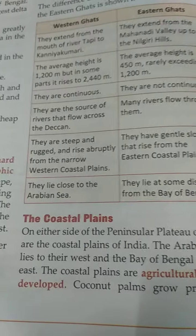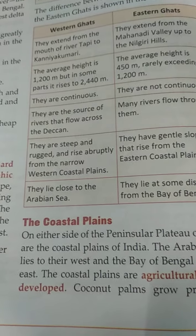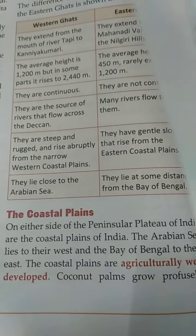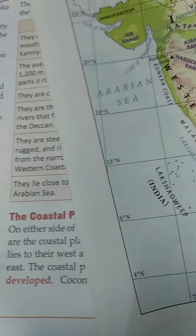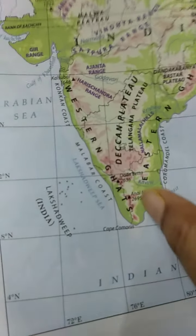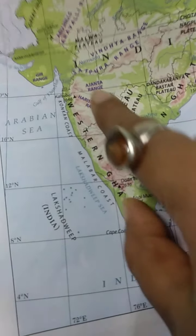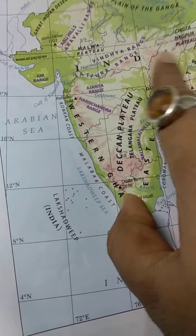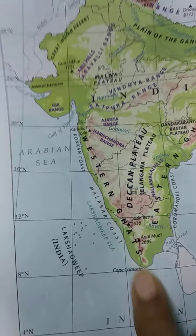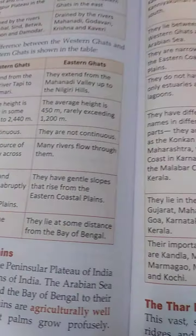On either side of the Deccan Plateau or the Peninsular Plateau of India there is a coastal line. This is the Deccan Plateau, Malwa Plateau, Chhota Nagpur Plateau, and this is the Coastal Line which we are now going to read about.